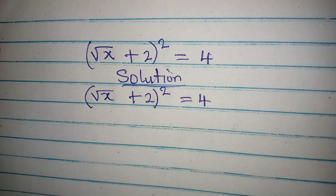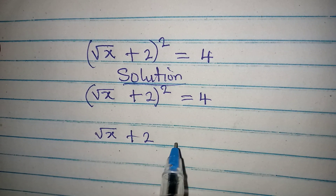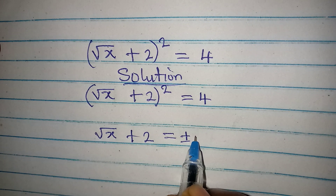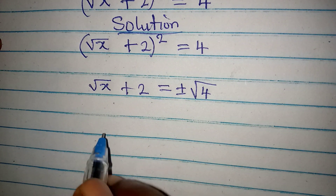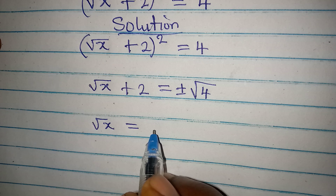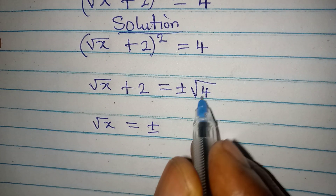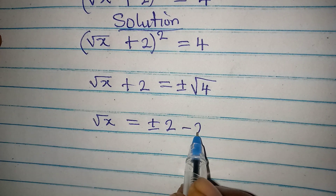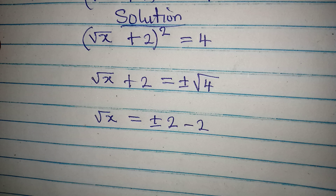So we have square root of x plus 2, which will now be equal to positive or negative square root of 4. This means that square root of x plus 2 is equal to positive or negative 2, since the square root of 4 is 2.